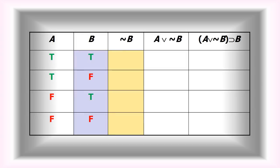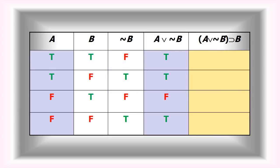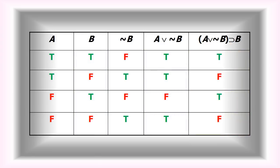I can use column B to calculate the tilde column — the tilde flip-flops the truth values, so I put a true wherever there's a false, and vice versa. Now I'm in a position to handle the wedge using those two columns: the only time the wedge gets a false is when you have two falsehoods, and that only happens in row three. Finally, for the last column, I need to find where A wedge tilde B is true but B is false — that happens in rows two and four. True antecedent, false consequent — that's how it works.